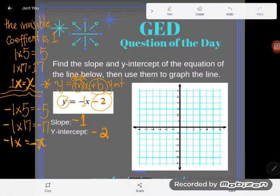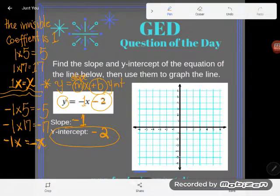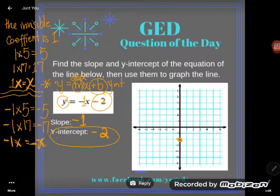All right. Now that we have these two pieces of information, we're able to slap them on a graph. Remember that the y-intercept is the point where our line crosses the y-axis. So I come to this vertical up and down y-axis and I find negative 2 and I drop a point right there.